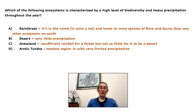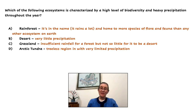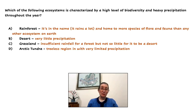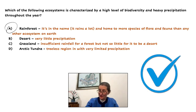Which of the following ecosystems is characterized by a high level of biodiversity and heavy precipitation throughout the year? A, rainforest — it's in the name; it rains a lot and is home to more species of flora and fauna than any other ecosystem on Earth. B, desert, which has very little precipitation. C, grassland, which has insufficient rainfall for a forest but not so little for it to be a desert. And D, arctic tundra, a treeless region with very limited precipitation. So clearly our answer here is A, rainforest.